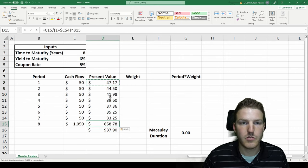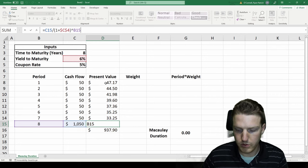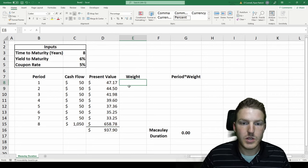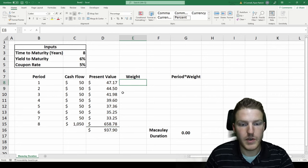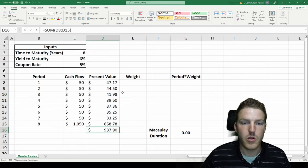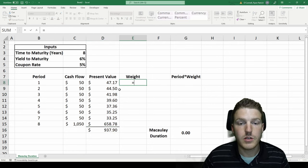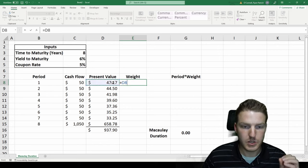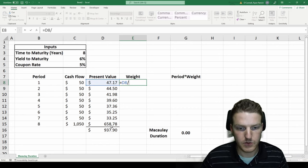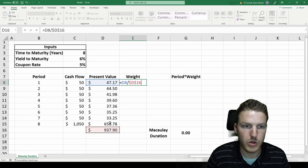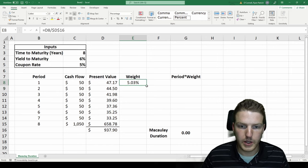So that's the present value for each one. You can see what it looks like for the last one. Now, we need to find the weighted present value of each one. So we found the total present value here. Now, let's find what weight each one contributes to that value. So it'll just be its present value for the period divided by the total, and we'll drag all that down.